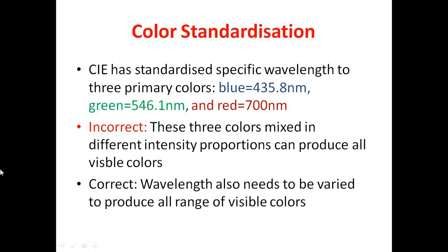However, it is not actually required to standardize these wavelengths as primary colors, because it would be incorrect to say that these three colors, when mixed in different intensity proportions, can produce all visible colors. We cannot produce the entire range of visible colors by varying intensity proportions alone. To generate every possible color in the visible range, you need to vary the wavelength as well.